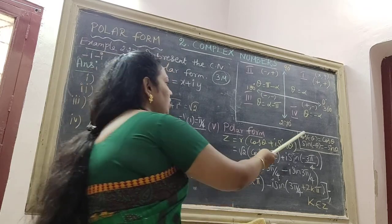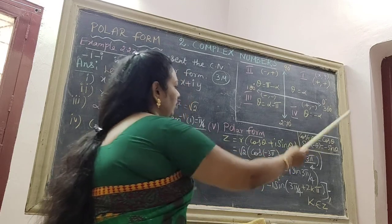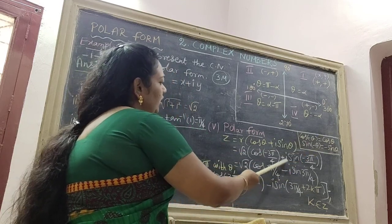Already we know that cos of minus theta is equal to cos theta, sin of minus theta is equal to minus sin theta. Therefore, here change the sign.